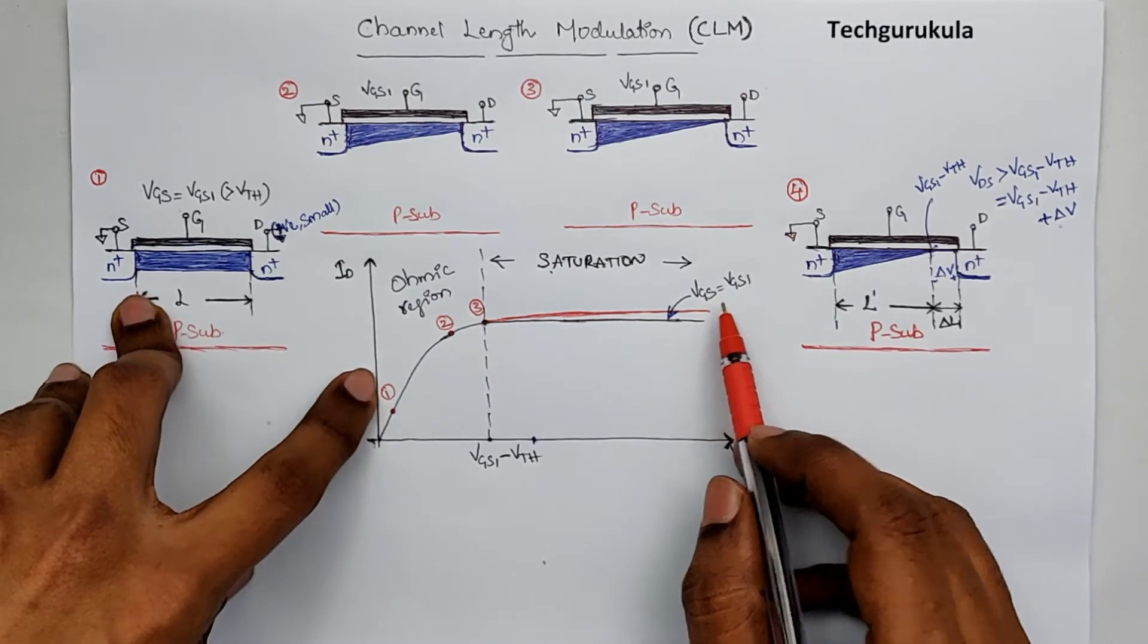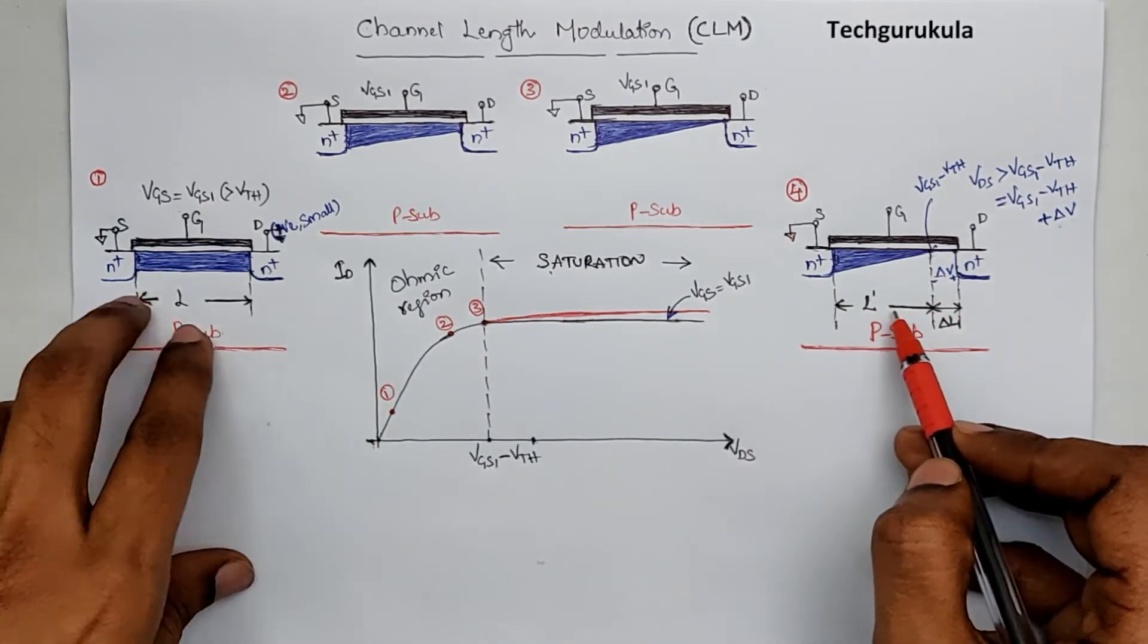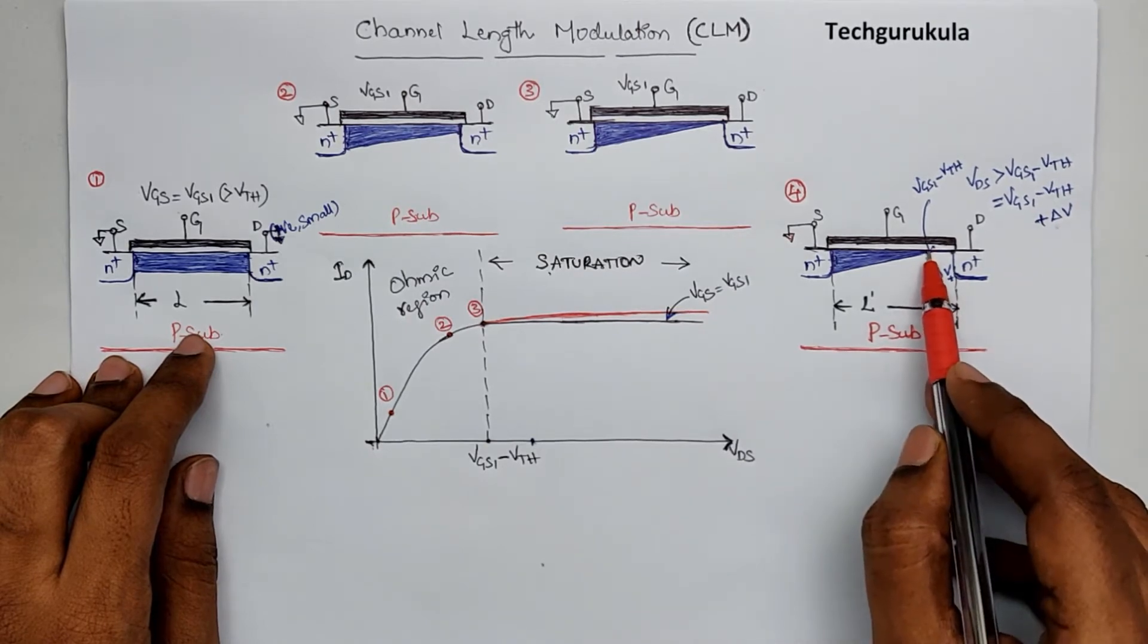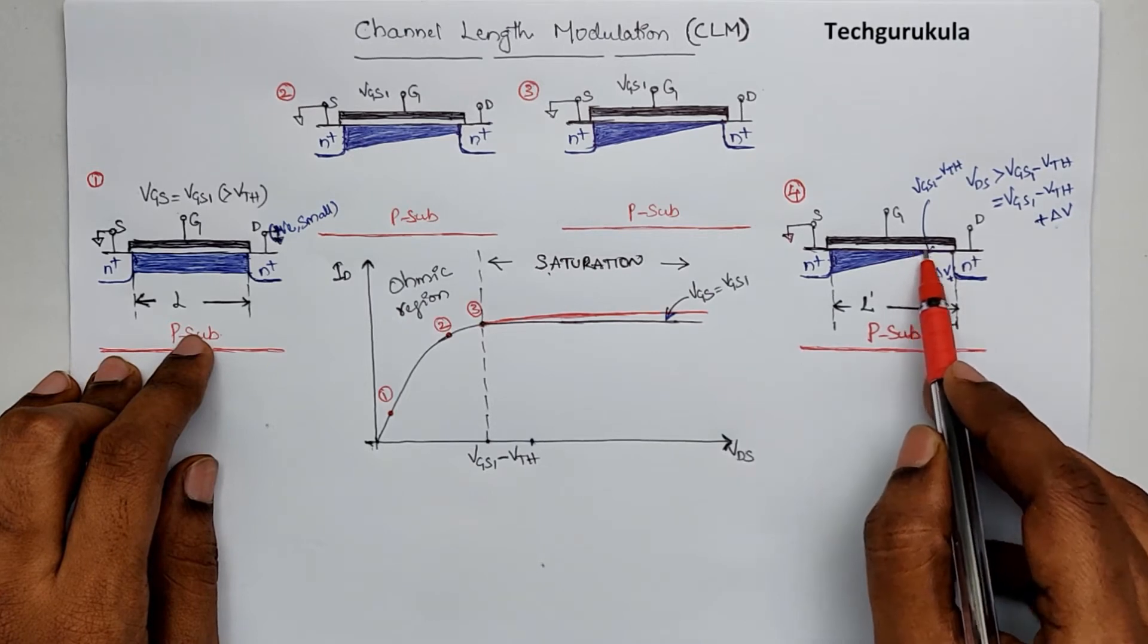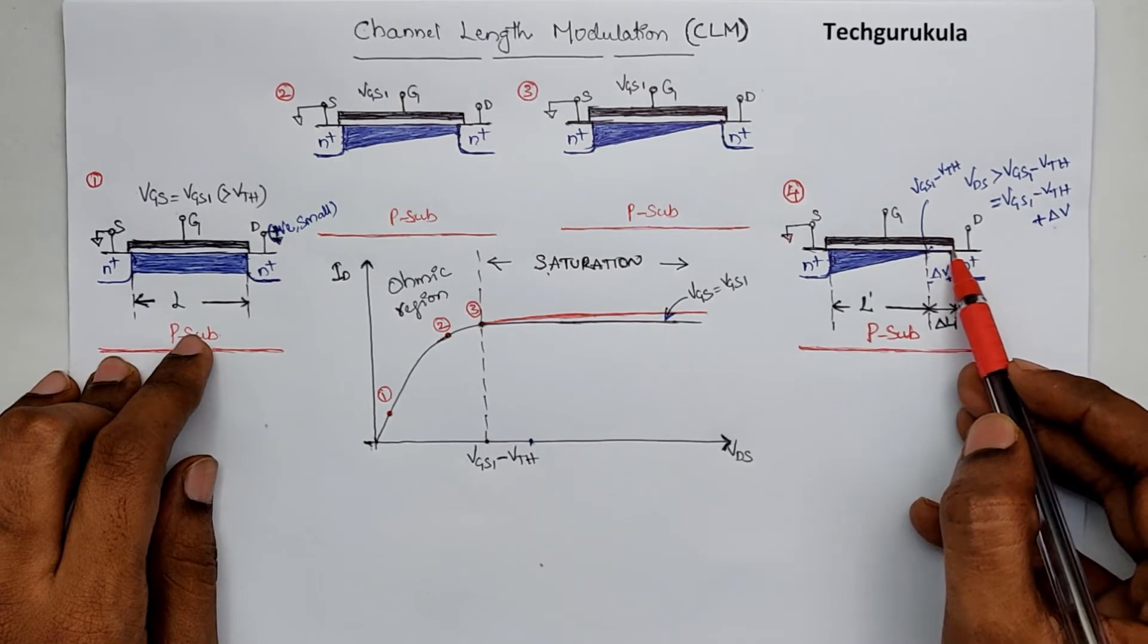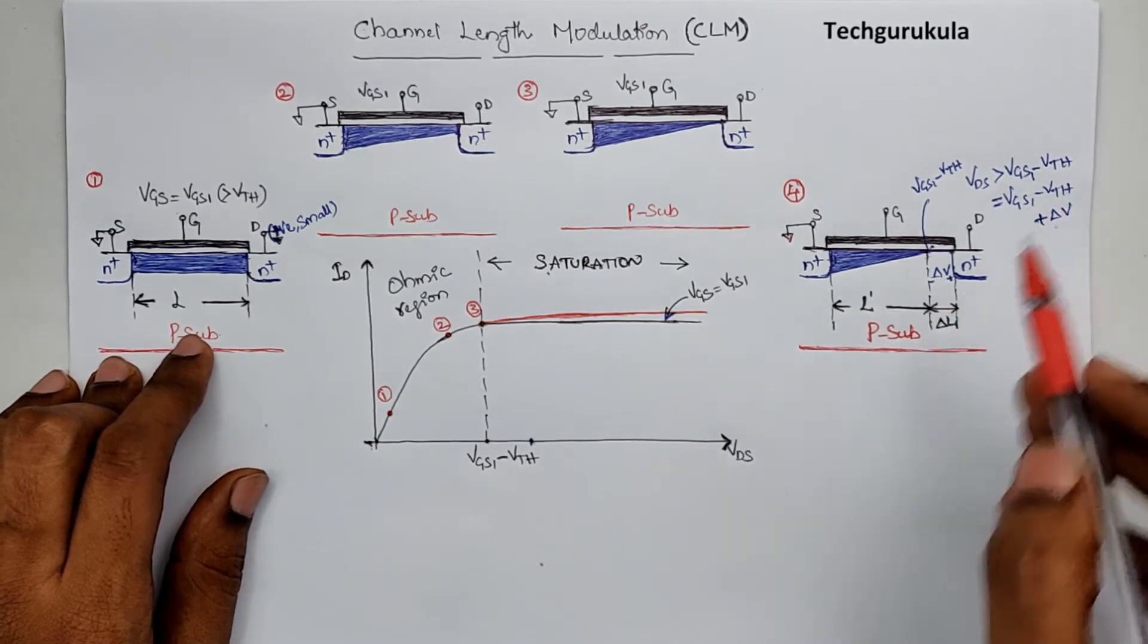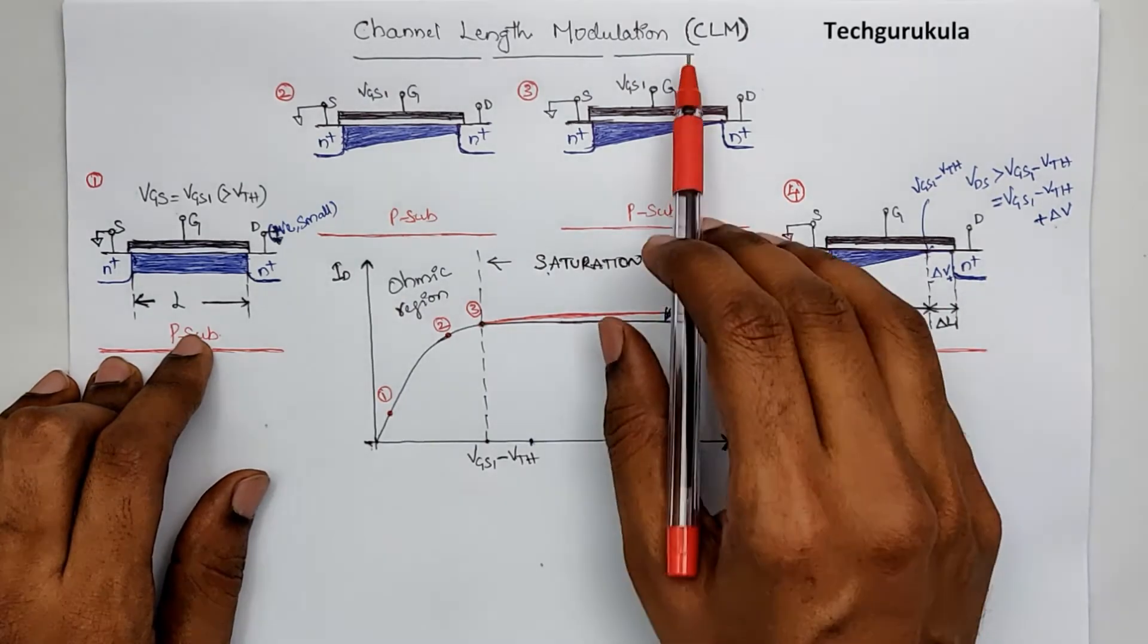Now why is this called channel length modulation? Because if you look at here, the channel seems to be this value which is less than the actual channel length. Now as we increase this potential beyond even this value, this point would move here. Which means from here onwards it will be like this, a single line kind of. But if we reduce this potential, this point would move to here, which means the channel length here would be actually getting modulated, increasing and decreasing with respect to the drain to source potential. Hence it is called the channel length modulation.